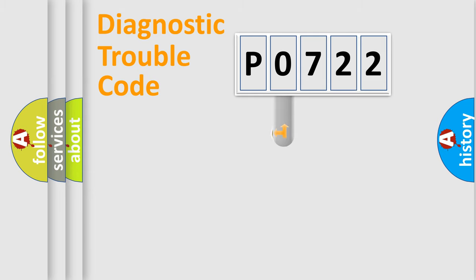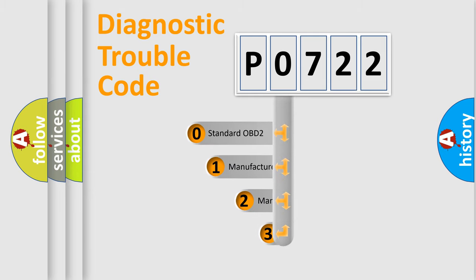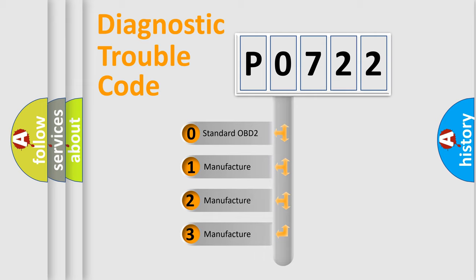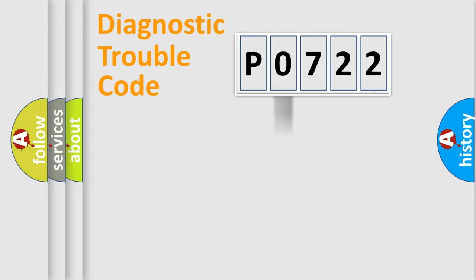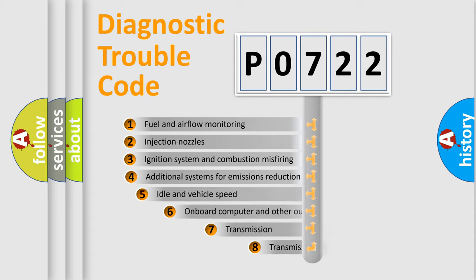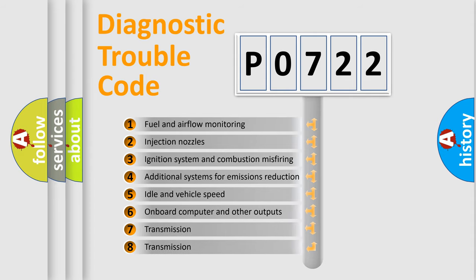This distribution is defined in the first character code. If the second character is expressed as zero, it is a standardized error. In the case of numbers 1, 2, or 3, it is a manufacturer-specific expression of the car-specific error. The third character specifies a subset of errors.